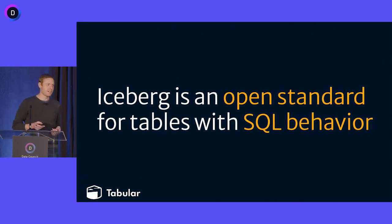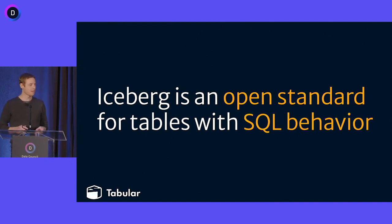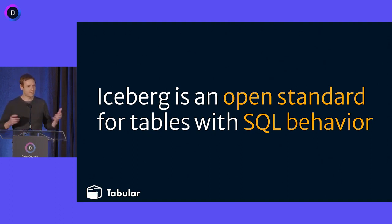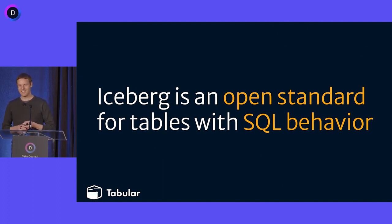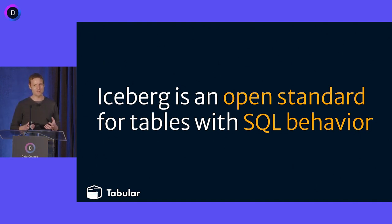The best definition of Iceberg right now is that Iceberg is an open standard for large-scale, big data tables — the kind that we're all used to working with — but crucially, it is with SQL behavior. One of the biggest stumbling blocks for the big data ecosystem in the last decade has been that we accidentally compromised SQL behavior a long time ago and never really restored it, and that's why we've had such a hard time working with data, building reliable pipelines, and actually doing things that are important for companies.